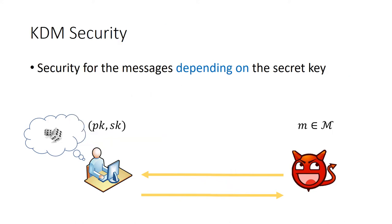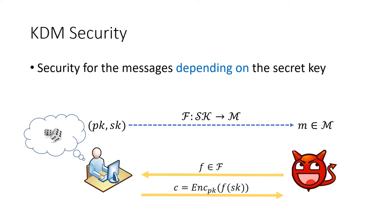To solve the security issue, the notion of KDM security has been proposed. The relationship between the message and the secret key can be generally described by a certain function class F from the secret key space to the message space. In this case, the query from the adversary is modeled as a function F, and the answer from the challenger is the ciphertext of F(SK).